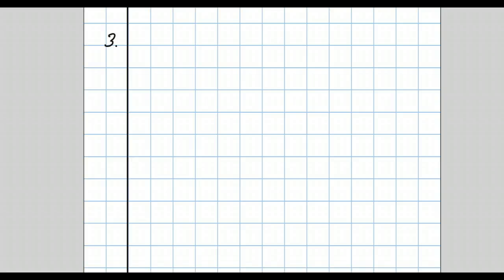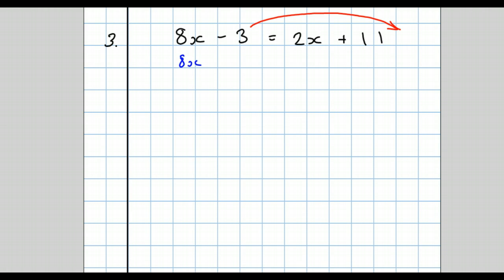Question 3: 8x minus 3 equals 2x plus 11. We move the numbers first. This 3 is going to go to the right-hand side, so we write 8x equals 2x plus 11. This time, because there was a minus sign in front, we're going to add 3. The left-hand side remains unchanged and we simplify the right-hand side: 2x plus 11 plus 3 is the same as 2x plus 14.